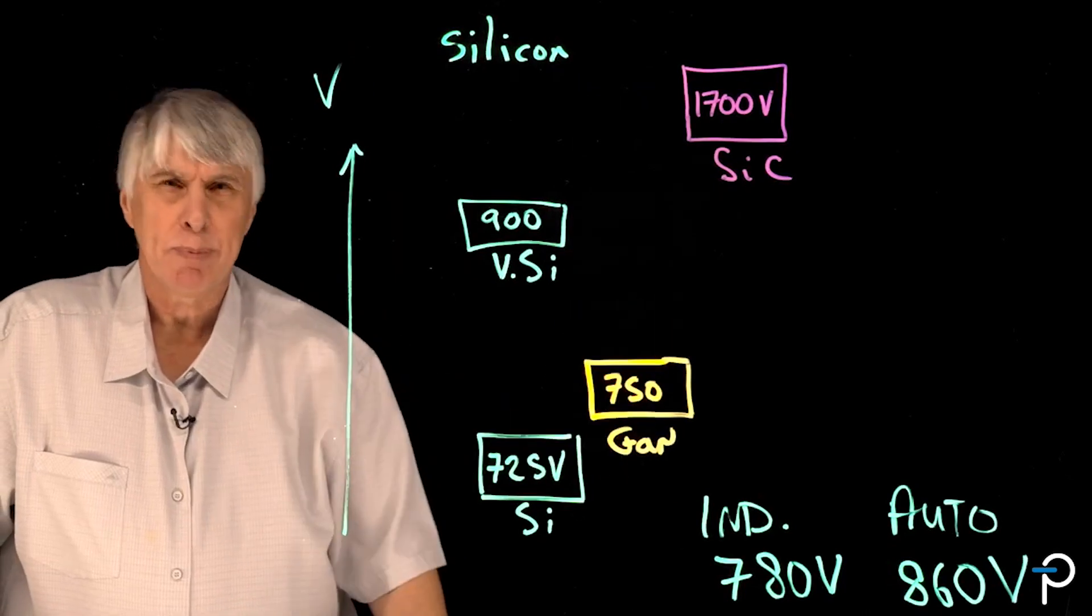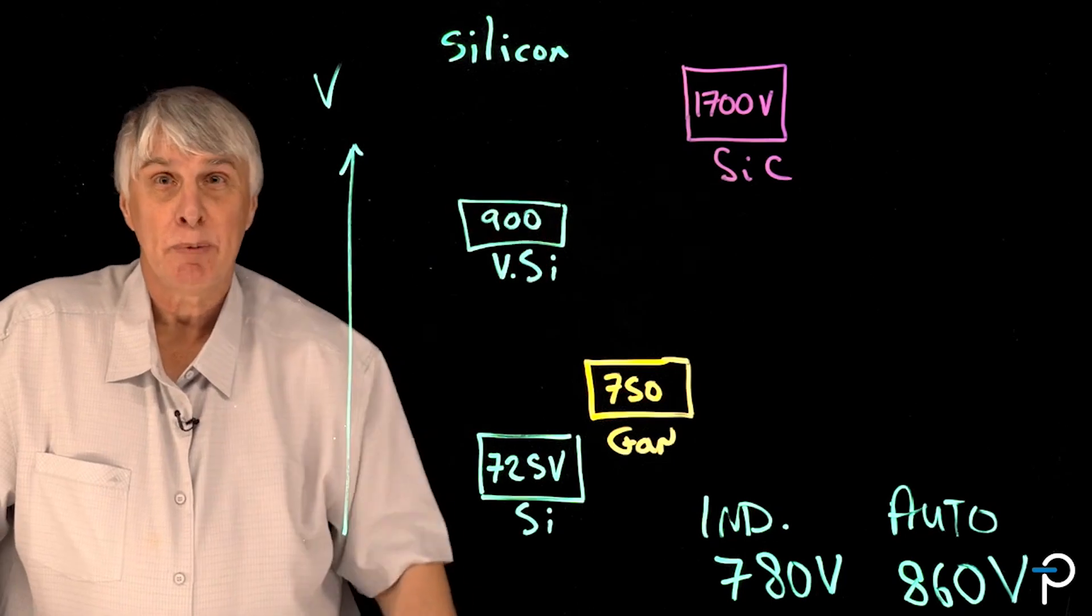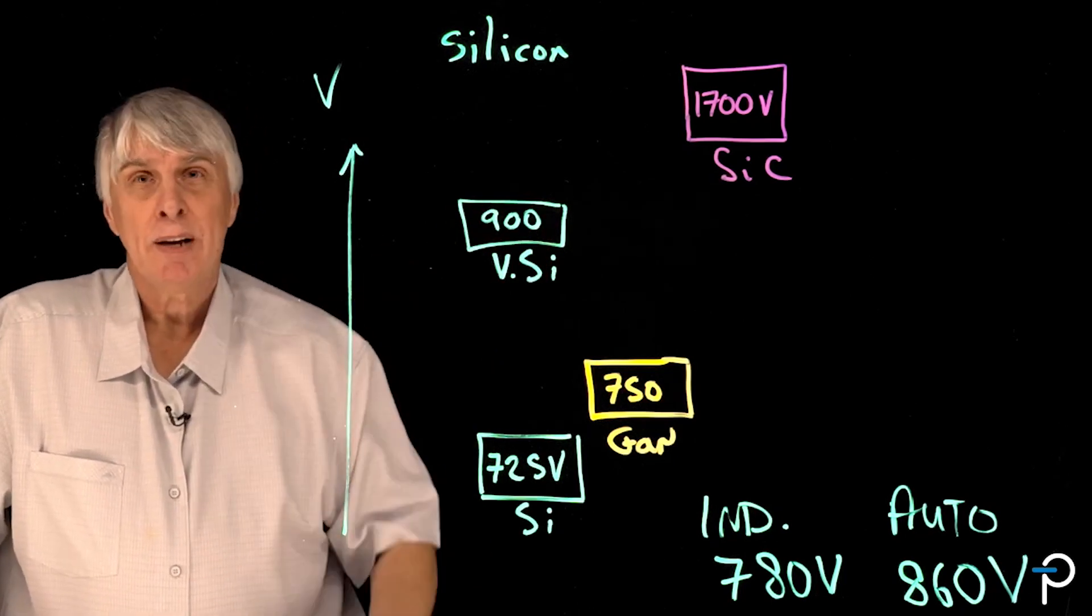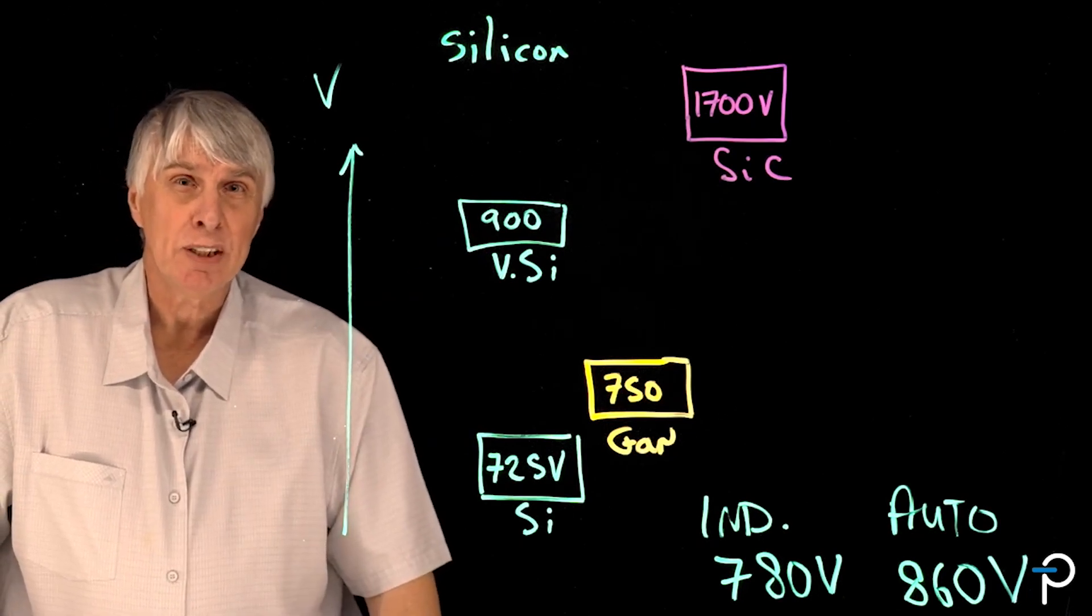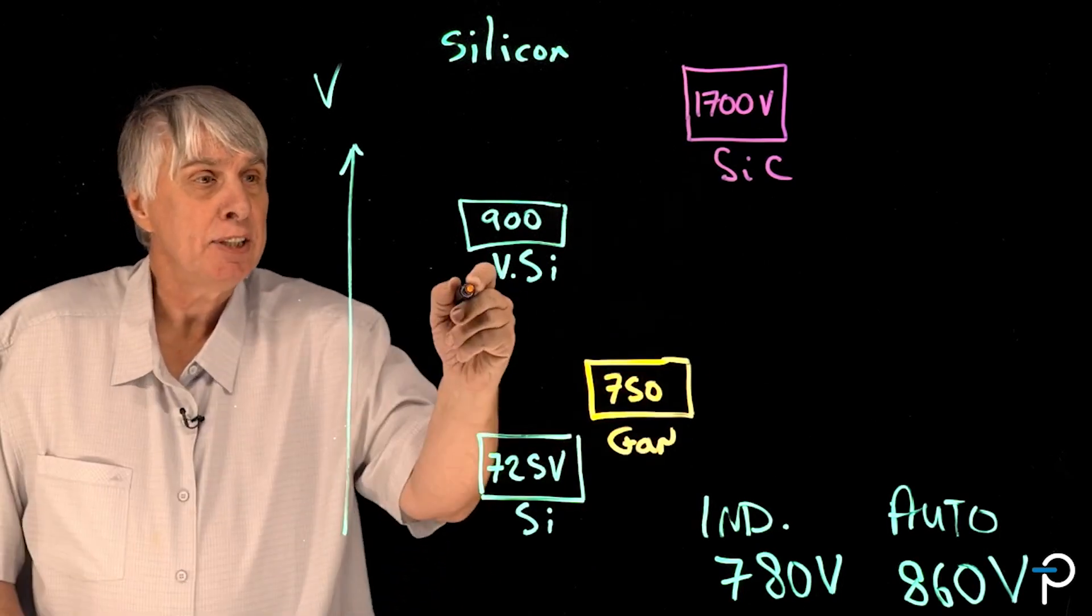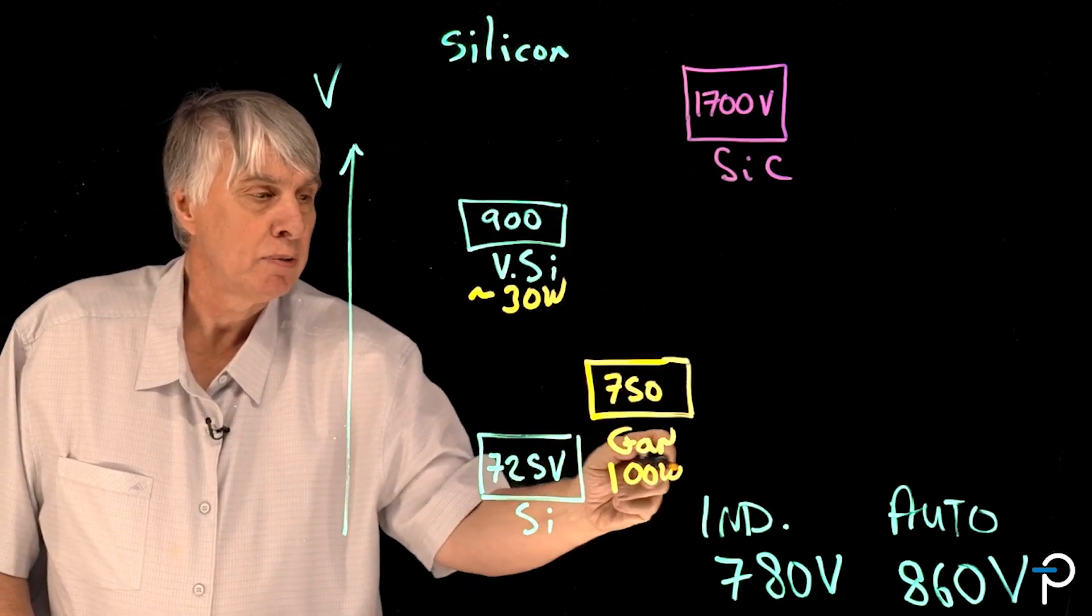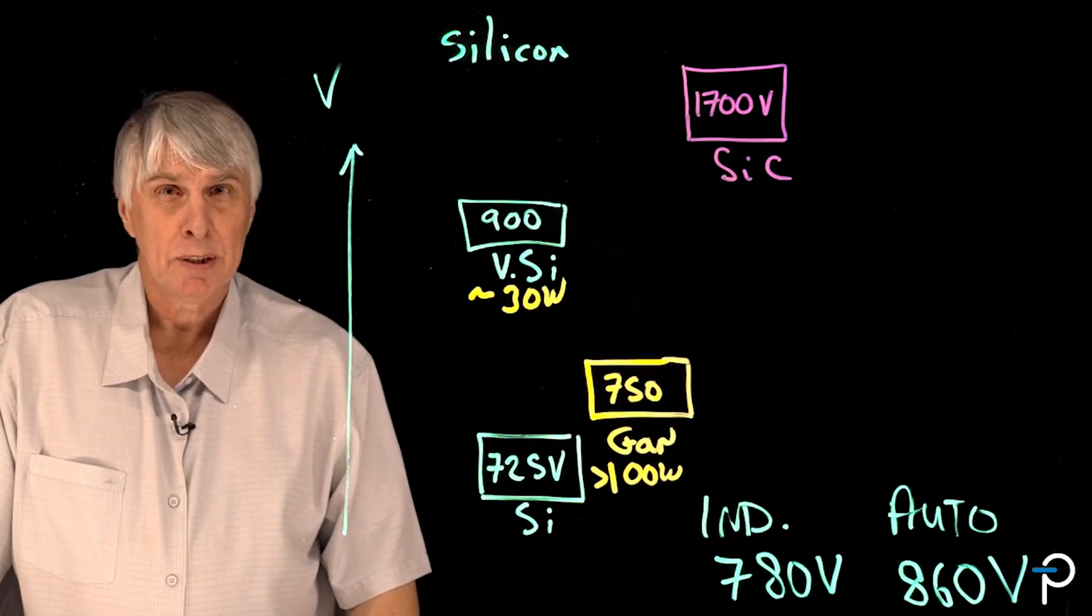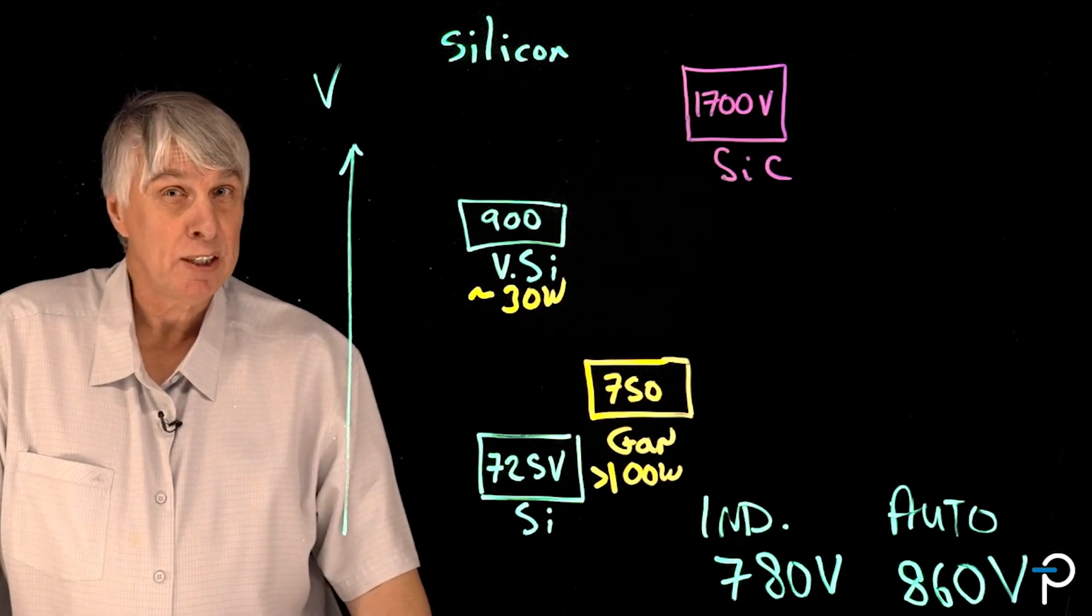So 750 volt GaN would be really good except it's not got the voltage rating we need. 900 volt silicon would be really good but switching losses are a little bit high at 900 volts. Also because we have a large die size the amount of power handling capability we can get into a 900 volt silicon transistor is a lot less than we can get into a 750 volt GaN. This is limited to perhaps 30 watts whereas this device can easily do more than 100 watts. So this is important especially with some changes that are going on in the marketplace.